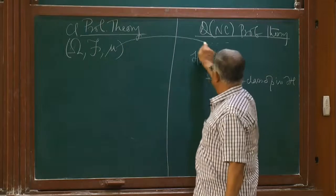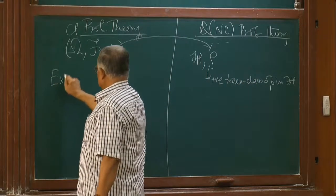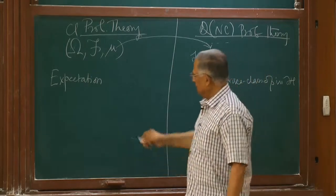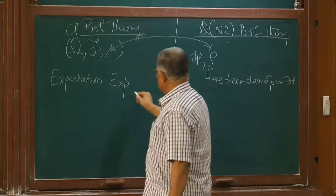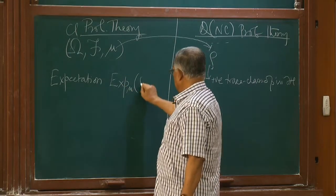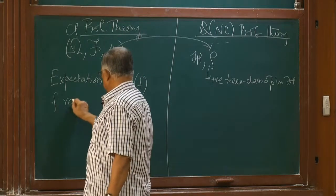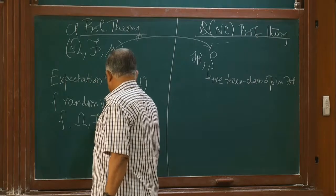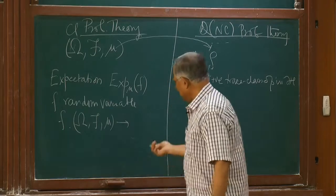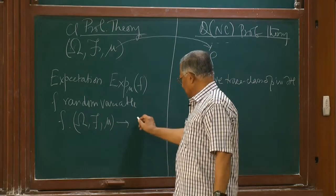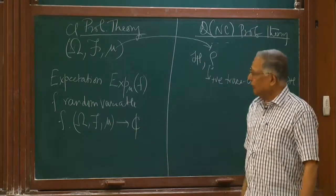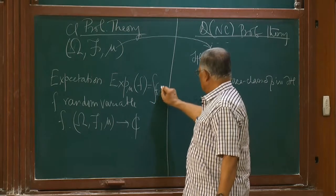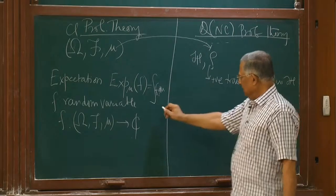What is rho? Rho is a positive trace-class operator in H. Trace-class positive — so it suffices to say that it has a trace. If it has a trace in one basis, you can easily show it has the same positive number as trace in all bases, because of positivity. So this mu is replaced by rho. Then comes what is known as expectation — in classical theory they call it expectation, and in this theory the same name persists.